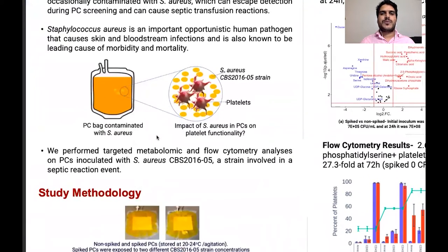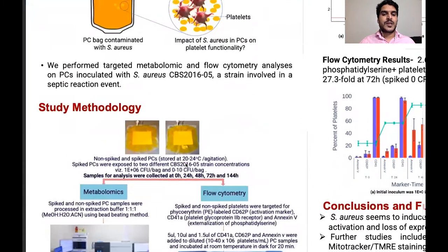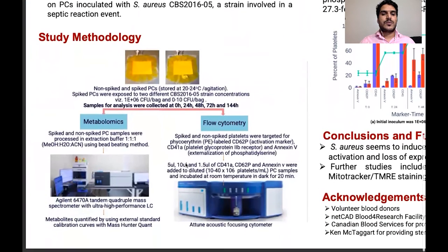We performed a targeted metabolomic and flow cytometry analysis in which PCs were spiked with the CBS 2016 strain. This strain has previously escaped PC screening detection and caused septic transfusion reactions. Our research methodology involved obtaining PC units from NETCAD Vancouver, and spiked PCs were exposed to two different CBS 2016 concentrations: 1×10⁶ and 0 to 10 CFU per bag.